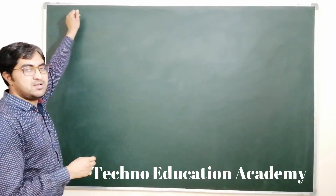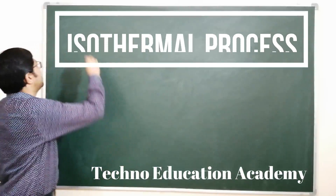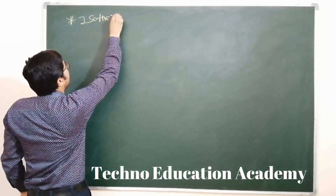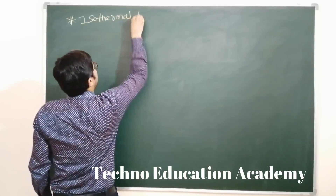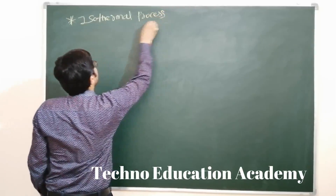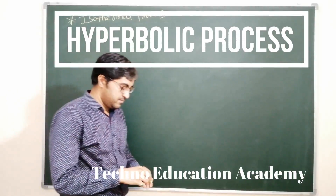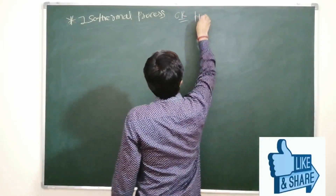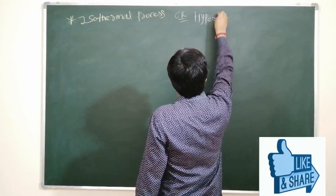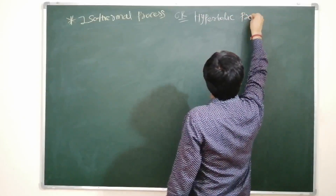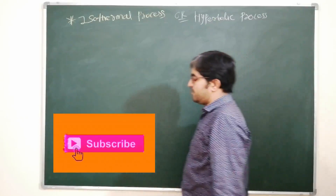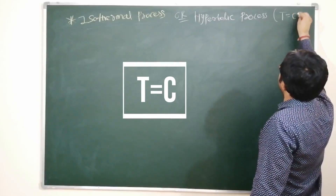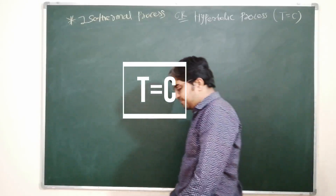Today we derive the equation for the isothermal process. The isothermal process is also known as the hyperbolic process. It is also known as the constant temperature process. Throughout the process, if temperature remains constant, then it is called an isothermal process.